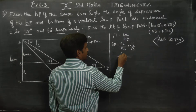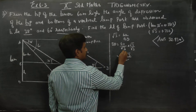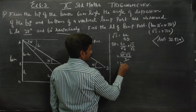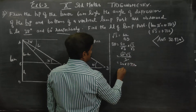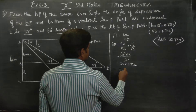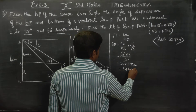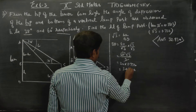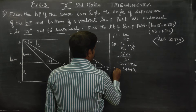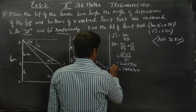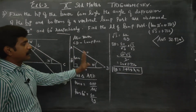Cross multiplying, BD equals 60 divided by root 3, which gives 20 root 3. Multiplying by 1.732, we get 20 times 1.732 equals 34.640. So BD equals 34.64 meters. That is our BD answer.